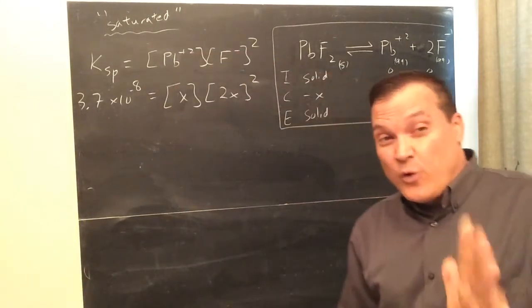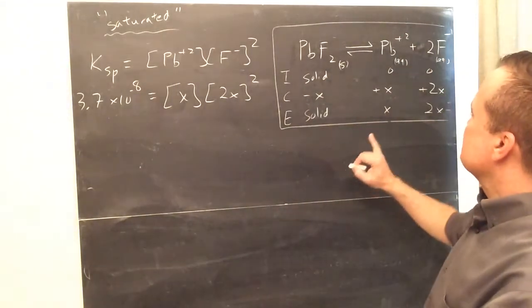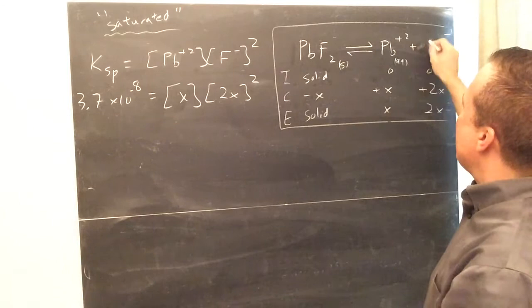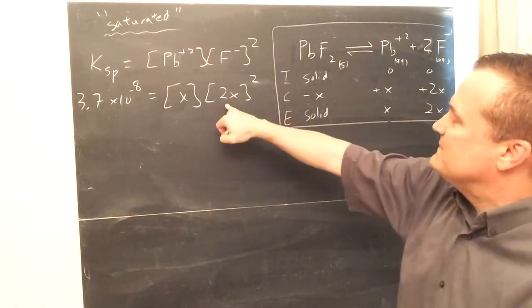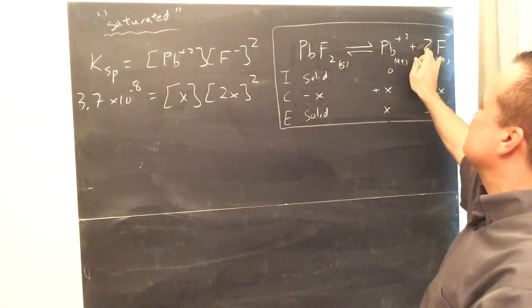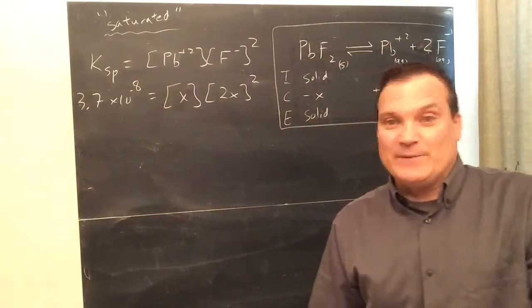What is F negative at equilibrium? It is 2X. And then we also have to square that. So look at how important this is in KSP problems. Notice the 2 right there, how it greatly affects your answer. It causes a 2X to be here and it causes it to be squared.